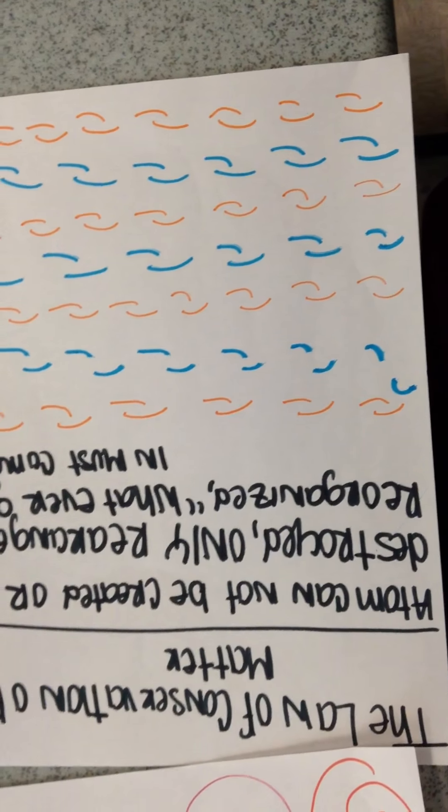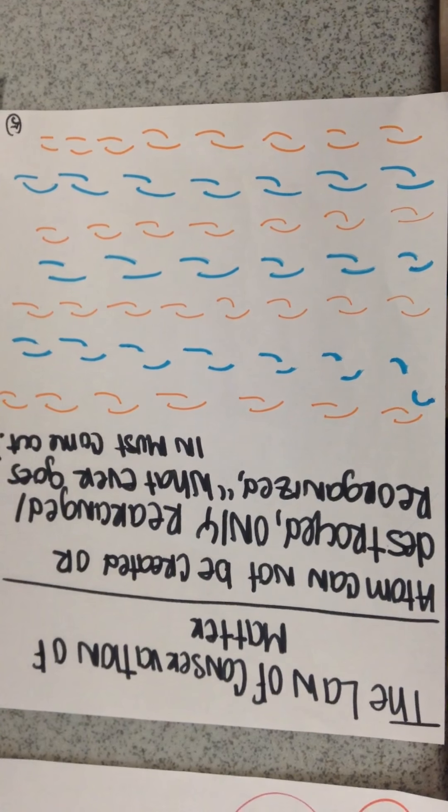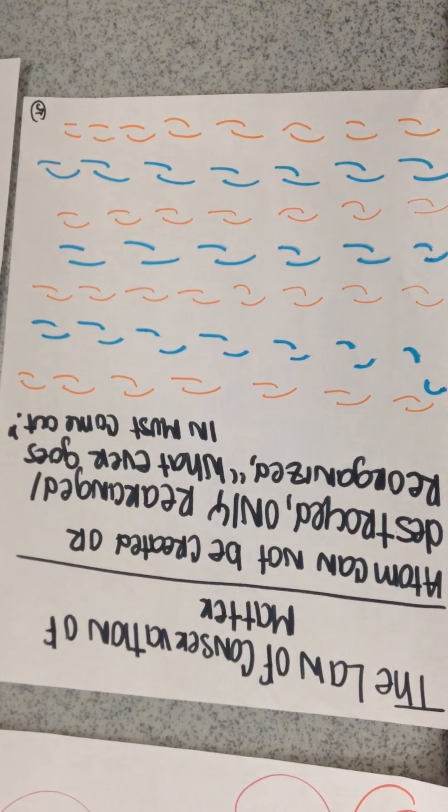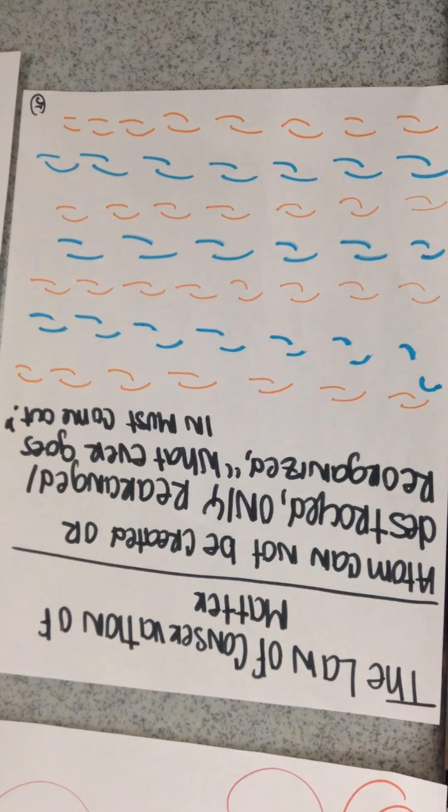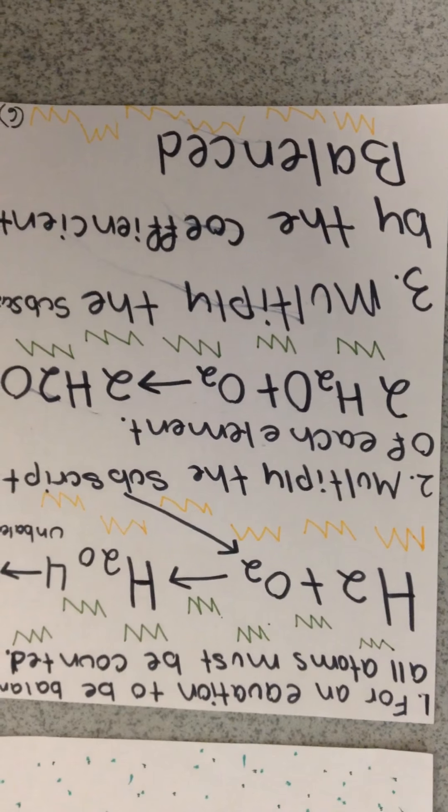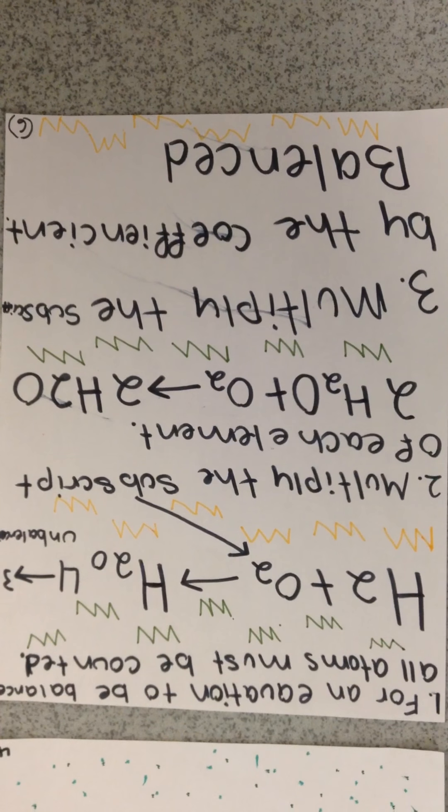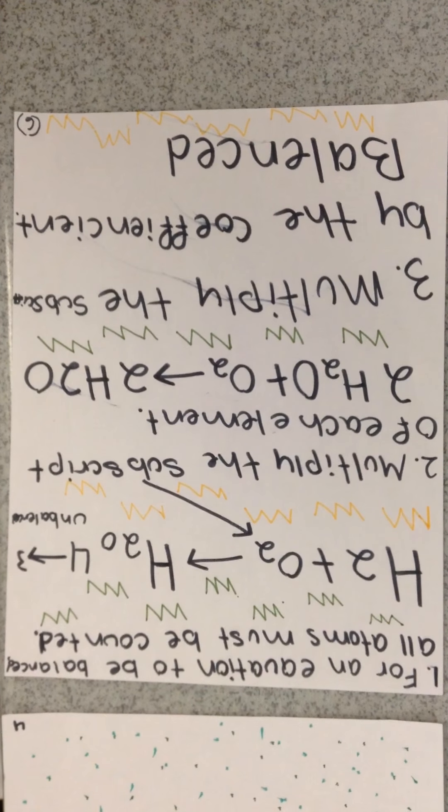The law of conservation of matter: atoms cannot be created or destroyed, only rearranged. Whatever goes in must come out. For an equation to be balanced, all atoms must be counted.